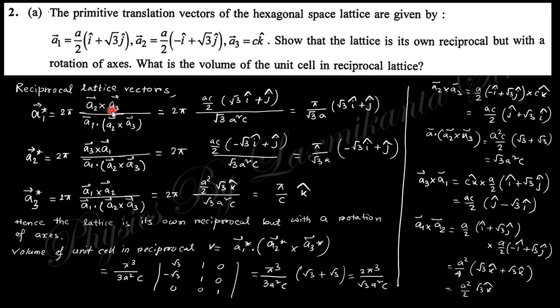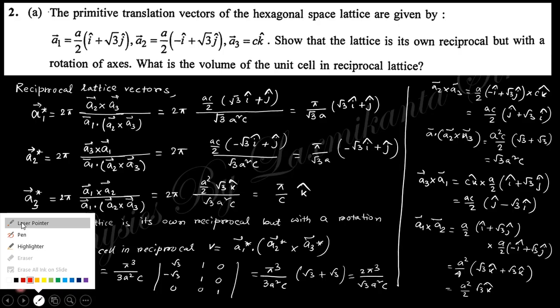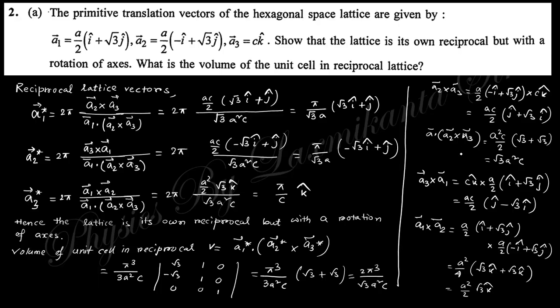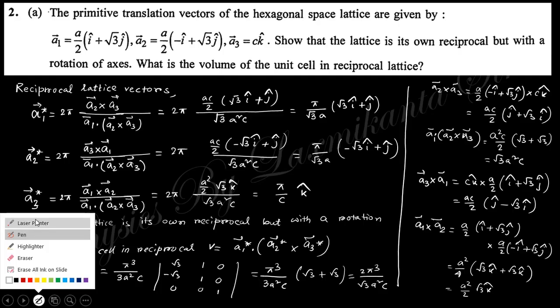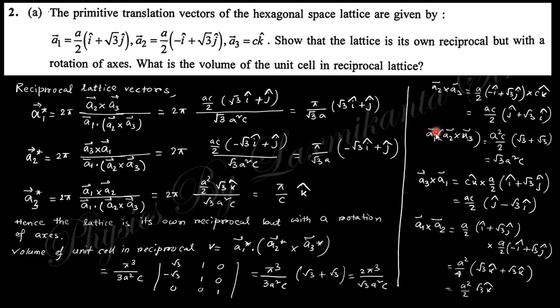This is the formula of reciprocal lattice vector: a1 star in reciprocal space is 2π times a2 cross a3, divided by a1 dot (a2 cross a3). a2 cross a3 gives you this one, and if you dot with a1, this must be a1.